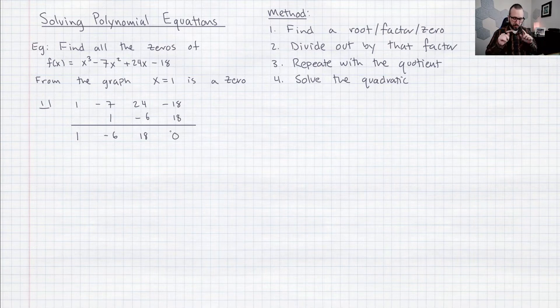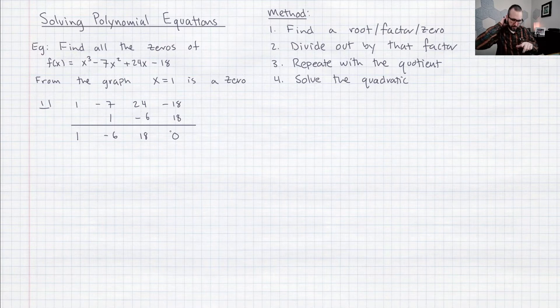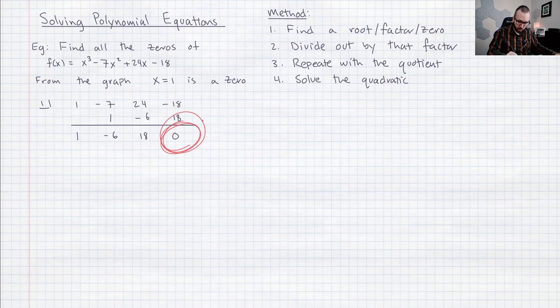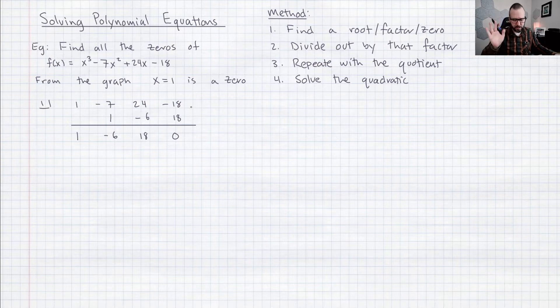So that tells us that we have correctly found one of these zeros. If you don't get zero right here that means that you either messed up the long division or you plugged into the calculator wrong or you got some zero wrong. This zero right here has to happen.